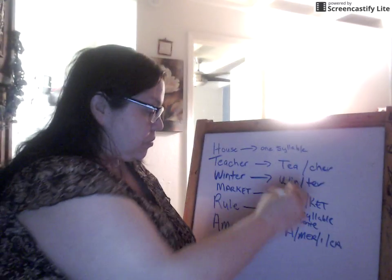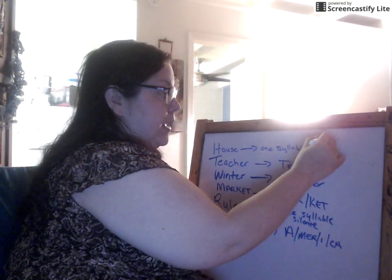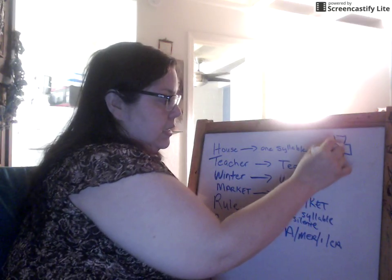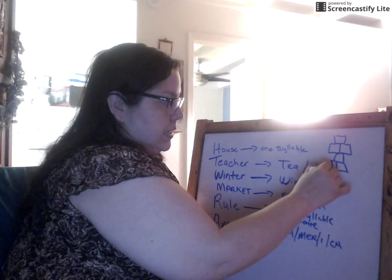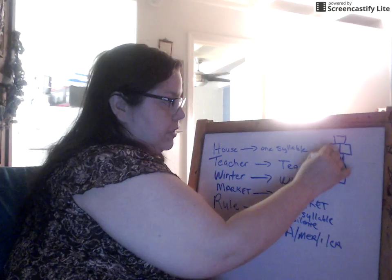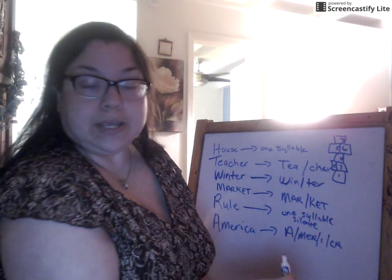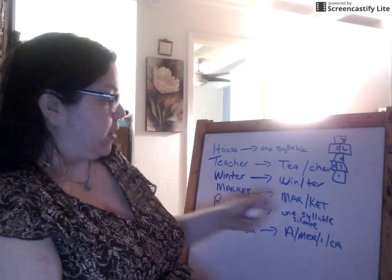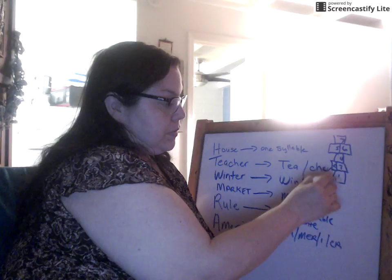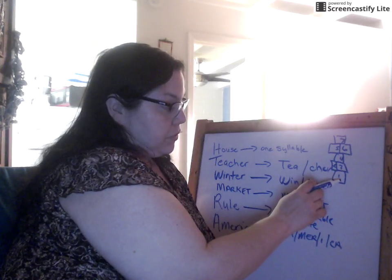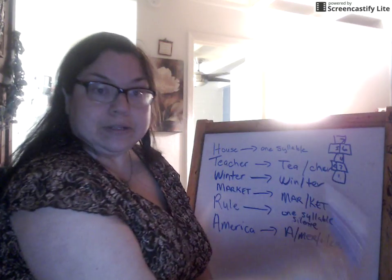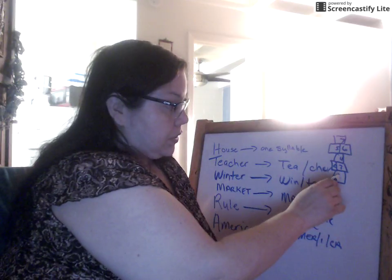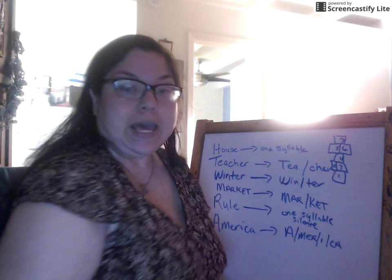Let me give you an example. We have a hopscotch grid with one, two, three, four, five, six, seven squares. With two teams, someone says a word — for example, 'market' — and a player jumps to one, two squares for the two syllables. If we have a bigger word like 'America,' which has four syllables, we go one, two, three, four. That's the game. Does anyone have any questions?